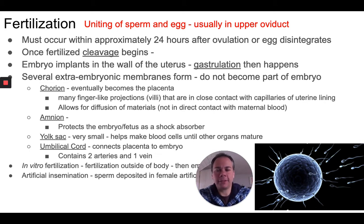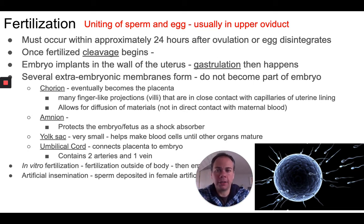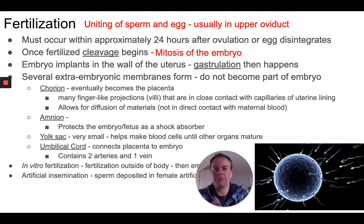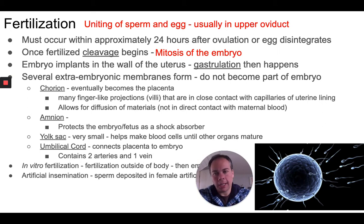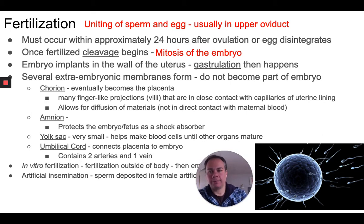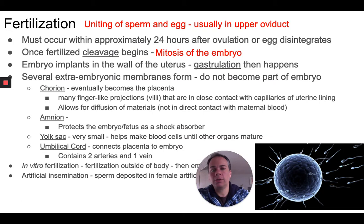If the egg cell is not fertilized, after about 24 hours it disintegrates and is shed out of the woman's body during the menstrual period. If it is fertilized in the oviduct, that's when cleavage begins — cell division through mitosis of the embryo. The first cell is called the zygote; once it starts cleavage and divides, we call it an embryo. As the embryo travels down the fallopian tube over several days, it's dividing the entire time, forming the morula, then the hollow blastula, then gastrulating to form layers of cells.